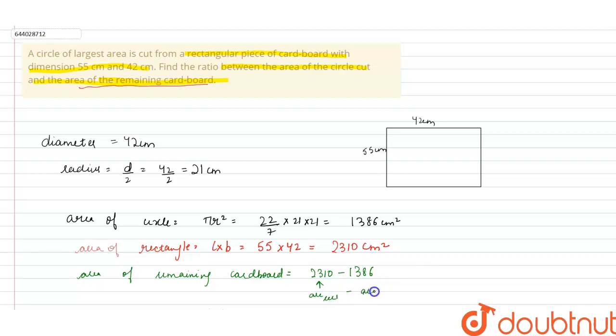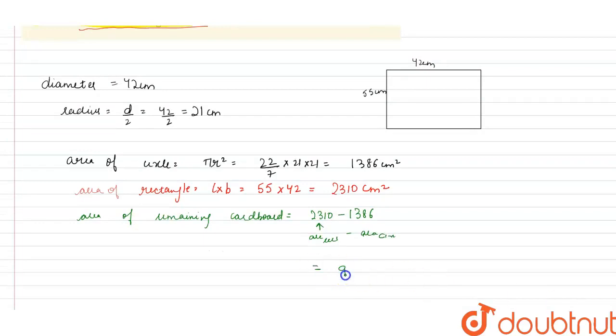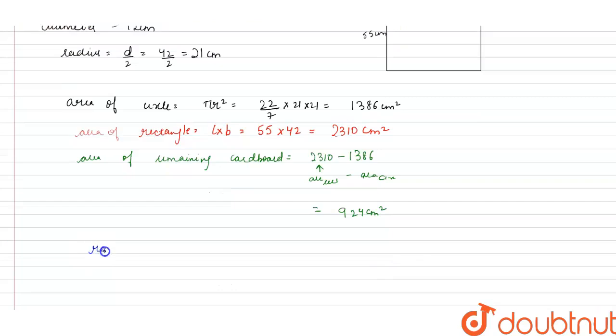So this is equals to 924 centimeter square. Now we have to find the ratio between the area of circle to area of remaining cardboard, which is equals to area of circle, 1386, divided by 924.